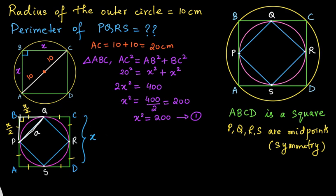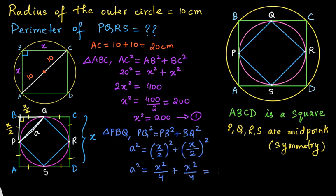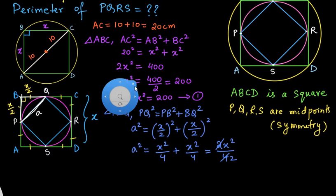Applying Pythagoras to triangle PBQ: PQ² equals PB² plus BQ². So a² equals (x/2)² plus (x/2)², which equals x²/4 plus x²/4. Taking 4 as the common denominator gives 2x²/4, which simplifies to x²/2. Therefore a² equals x²/2.